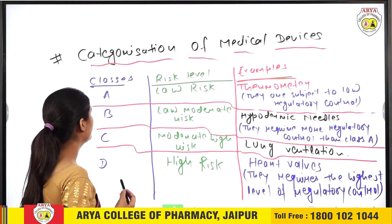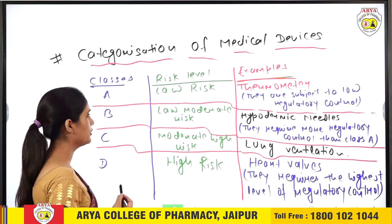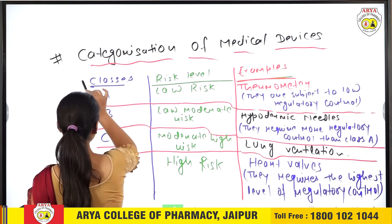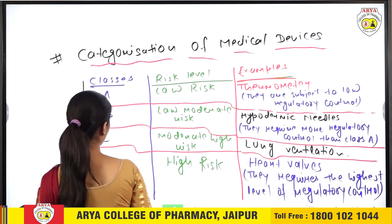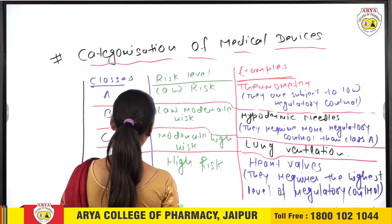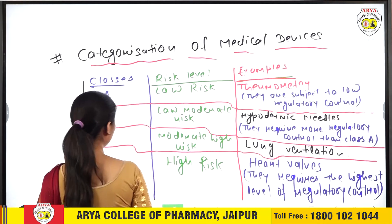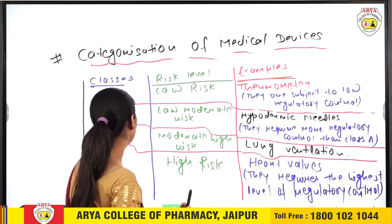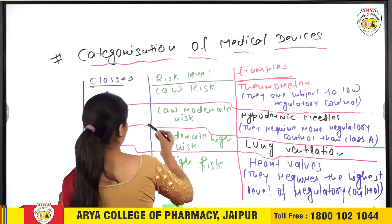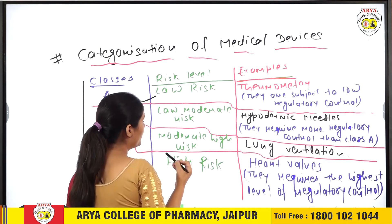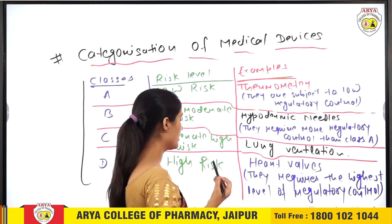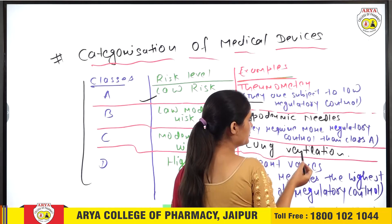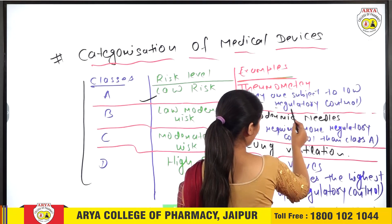Next is Categorization of Medical Devices. Basically, this is four classes divided into class A, B, C, and D with their risk labels and examples. For class A, the risk level is lower and their example is a Thermometer. They are subject to low regulatory control.